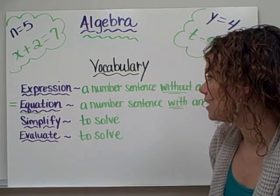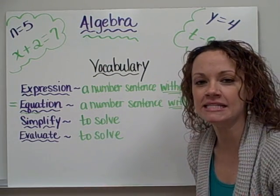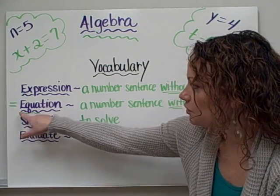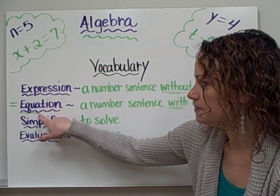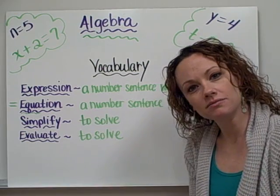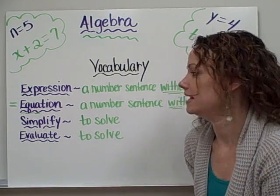The next word is equation. An equation is a number sentence that does have an equal sign. And an easy way to remember that is if you look at the word equation, the very beginning of the way the word is spelled starts just like the word equal. So that's a good way to remember that an equation is a number sentence with an equal sign.